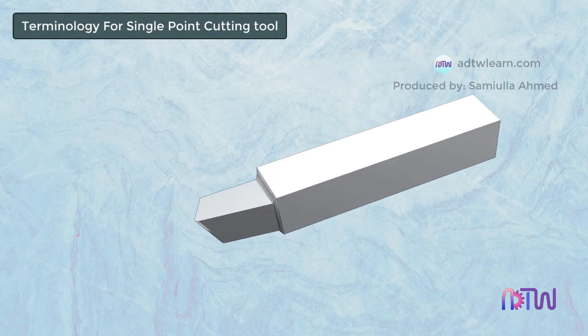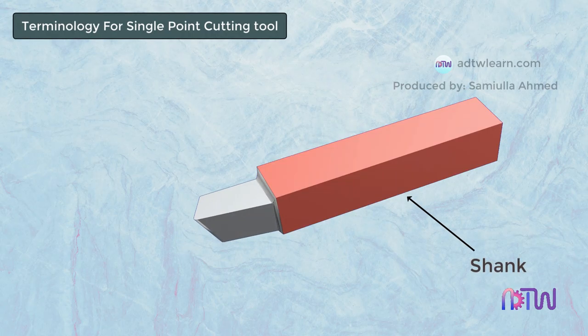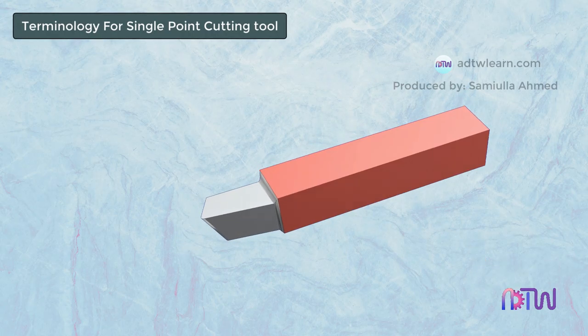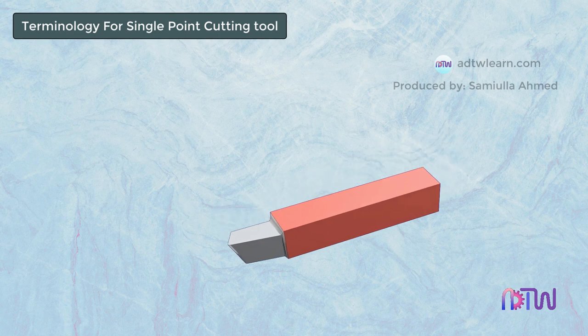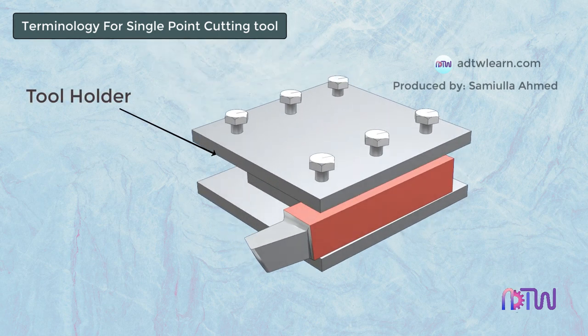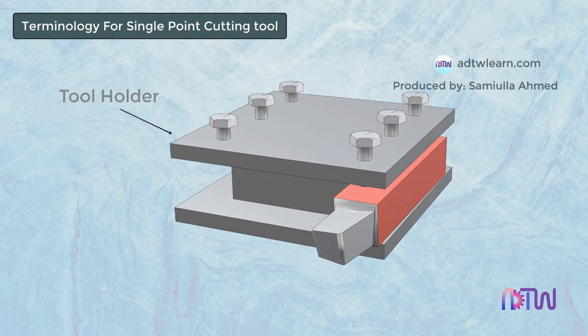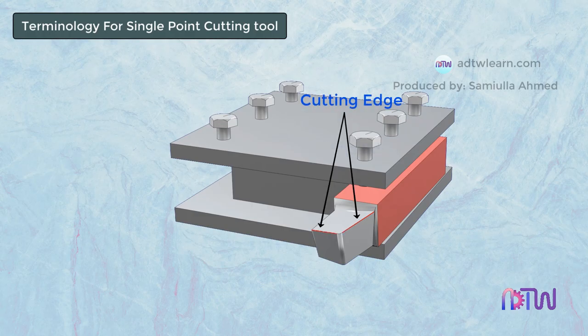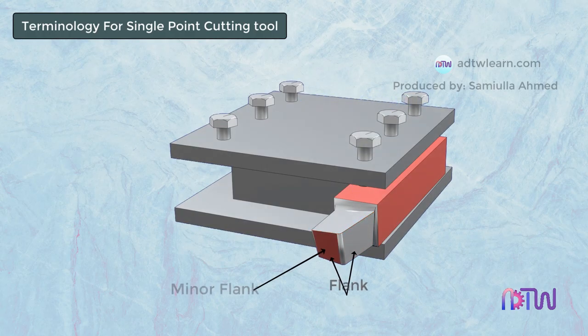This long body of the tool is called the shank of the tool. It is used to hold the tool in the tool holder. The surface adjacent to the cutting edge is called the flank.